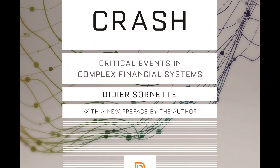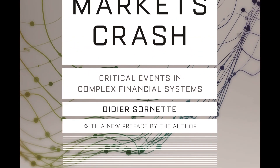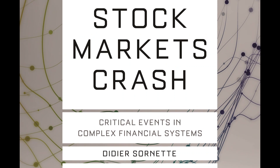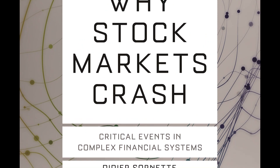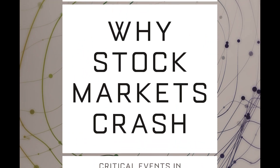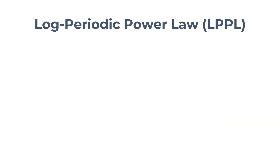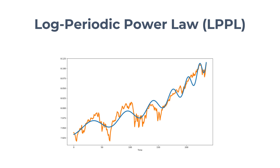Professor Sornette postulates that bubbles in financial markets show some similarities in the way they grow. His team models the behavior of a bubble using an equation called the log-periodic power law, or LPPL for short. By fitting a log-periodic power function to the historical prices, one can predict the most probable time of a crash.